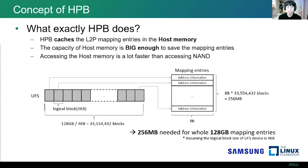Let's talk about the concept. HPB improves performance by reducing read latency. It works with a simple idea: HPB supports caching the UFS device's mapping entries in host memory. HPB operates on the host side, so in the kernel it can locate and access the host memory without any additional procedure like DMA bounce buffer or something like that.